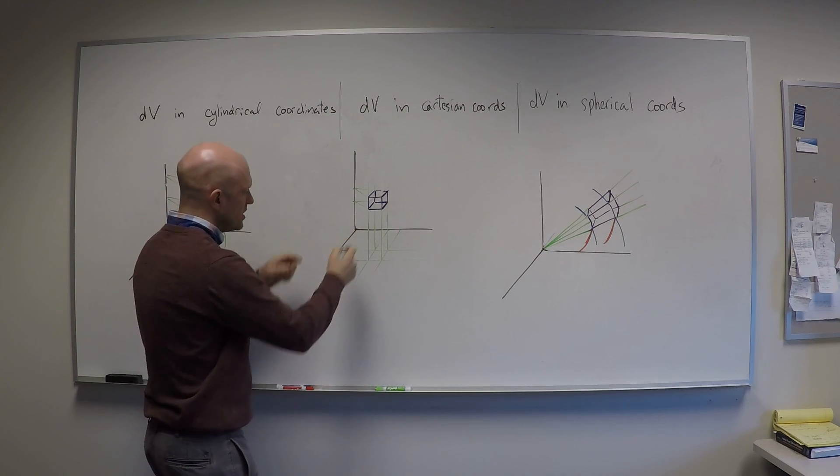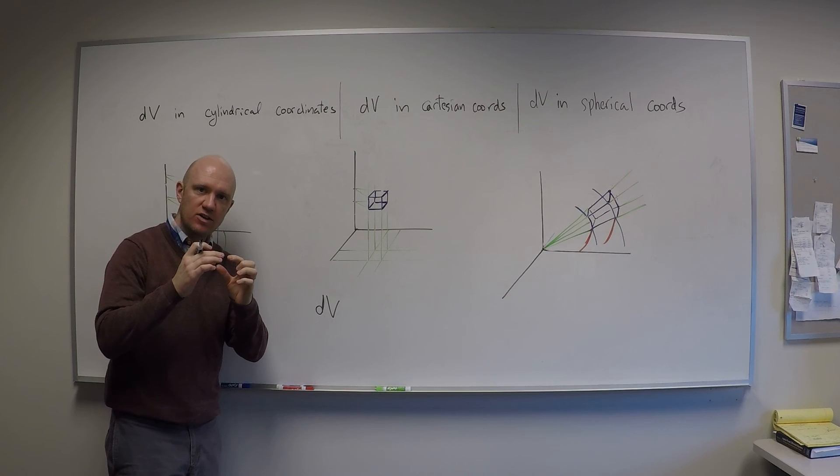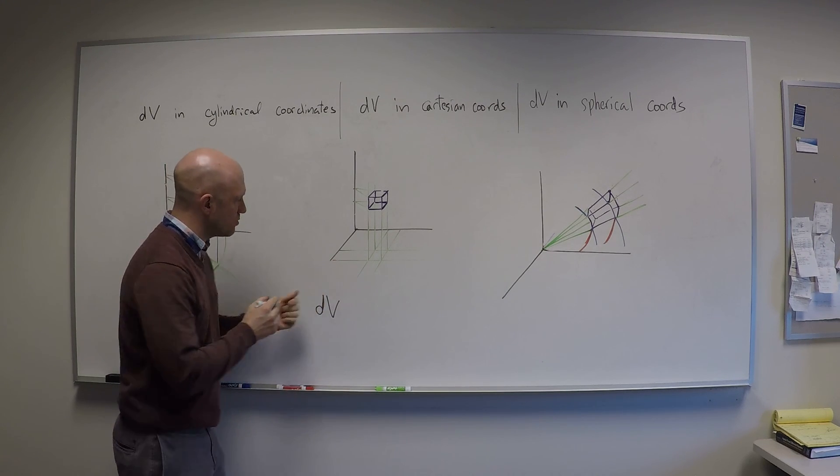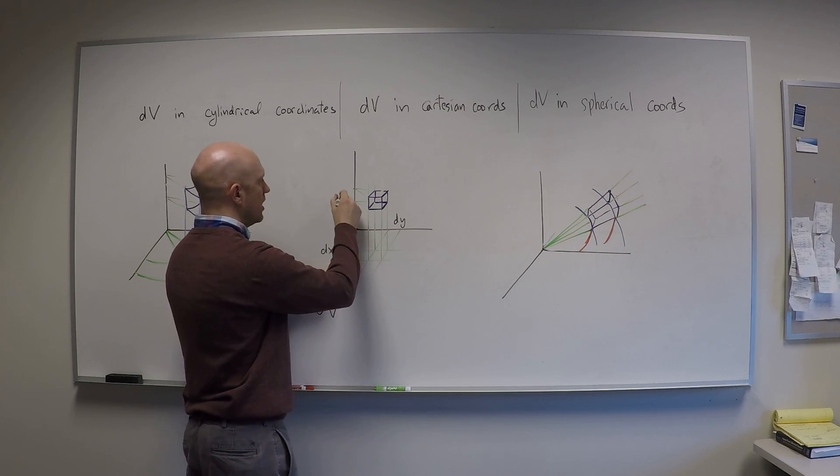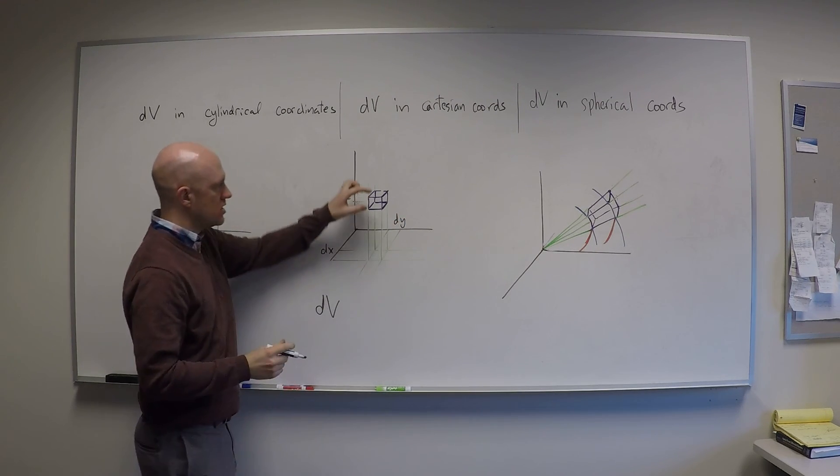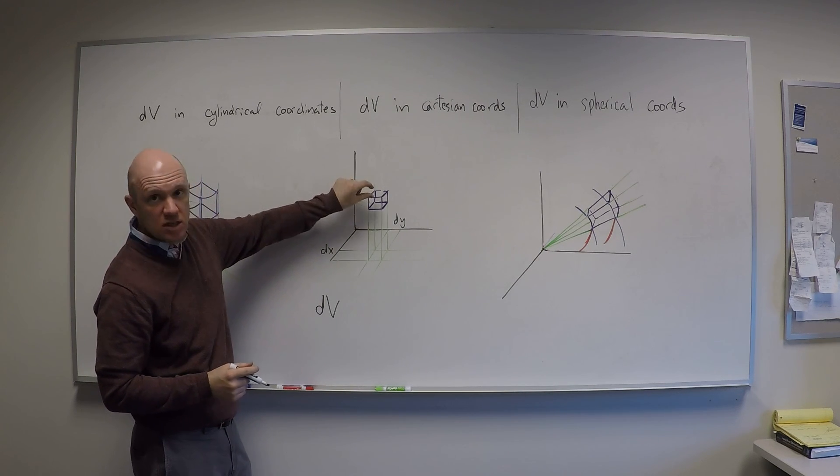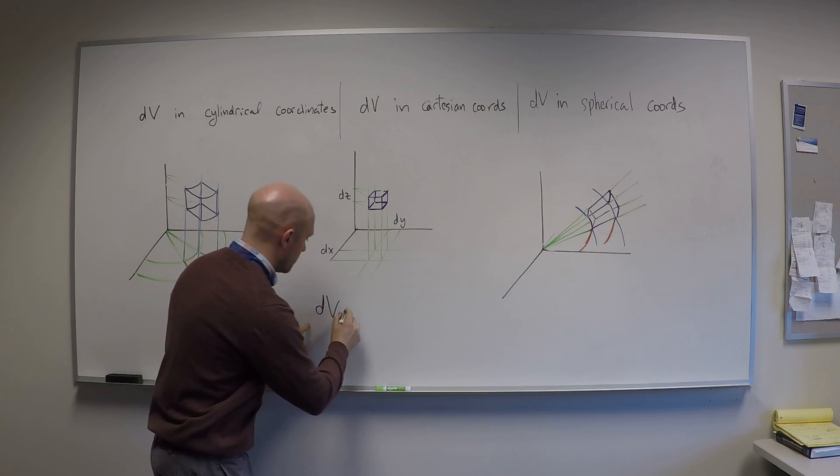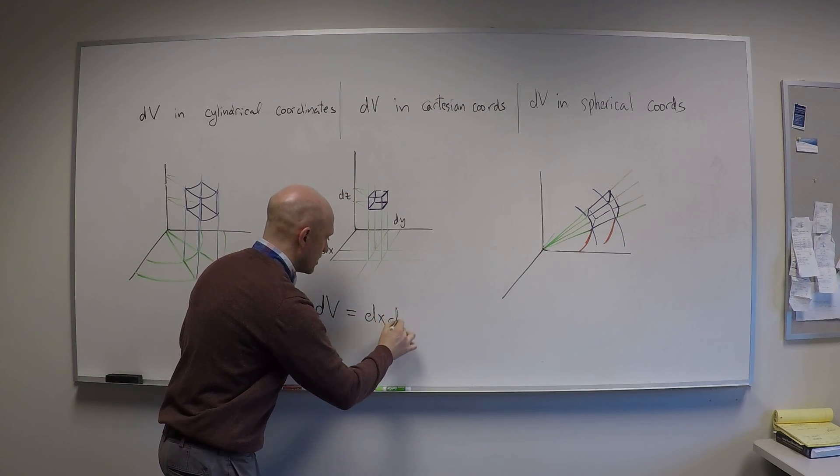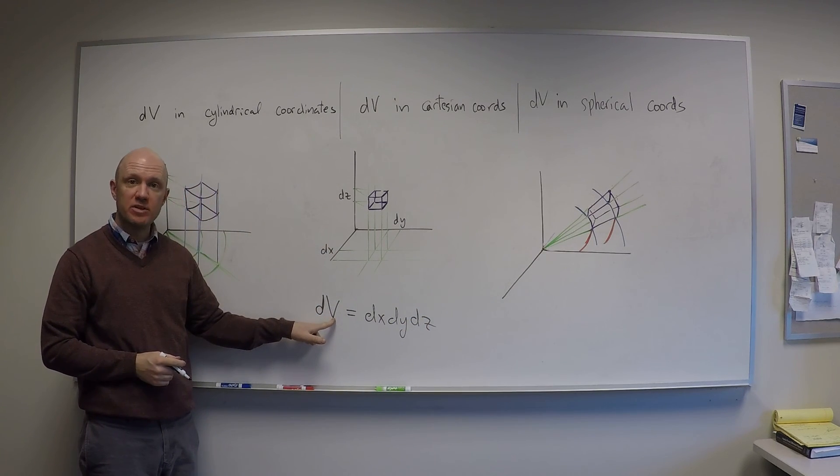If I want to know what dv is, remember dv is the small resulting change in volume that I get when I have a very small change in x, dx, a small change in y, dy, and a small change in z, dz. I get a little box whose dimensions are dx by dy by dz. And so the product of these three things, dx, dy, dz, gives me my small volume element, dv.